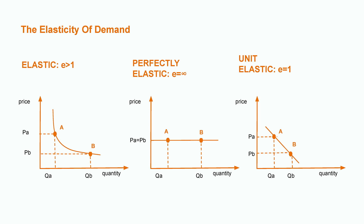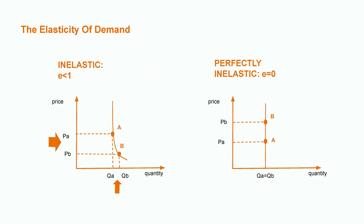Then we have unit elastic, which happens when elasticity is equal to 1. This means that the percentage change in price generates a percentage change in quantity in the same amount. As for inelasticity, the demand curve should become steeper. Can you see from the graph that a big change in price generates a change in quantity, but smaller? Do you see the difference in those gaps? Look at the arrows.